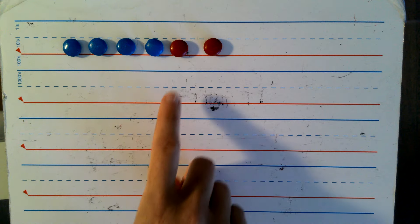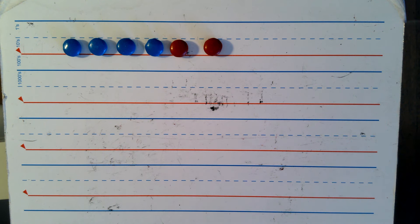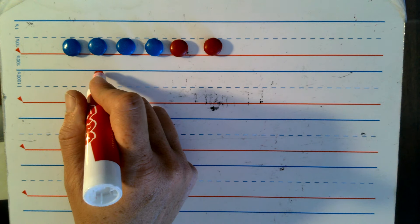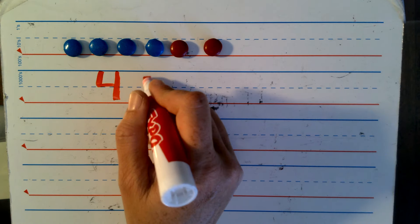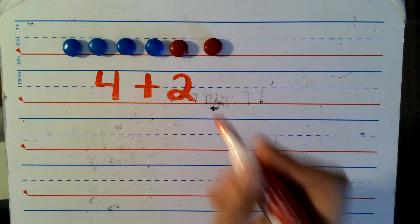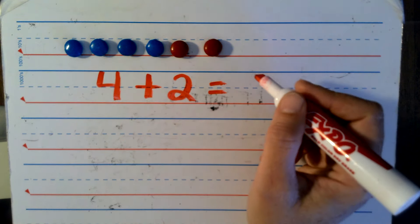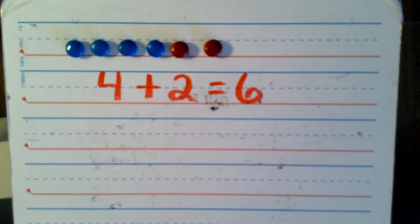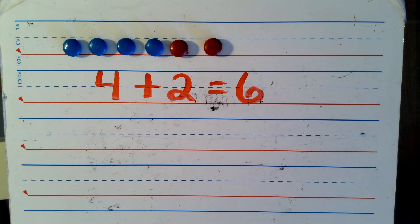And there are one, two red candies. All together I have six candies total. Let's write that out: there are four blue and there are two red — that's the same as, or the sum of, six candies all together. Yum yum!